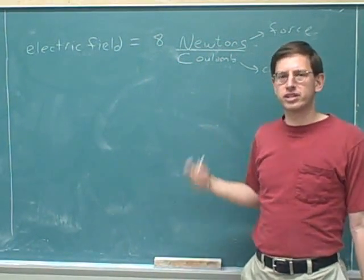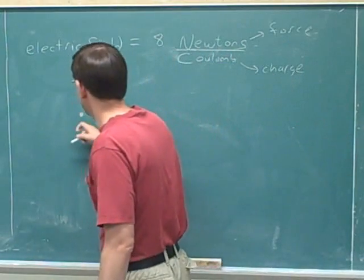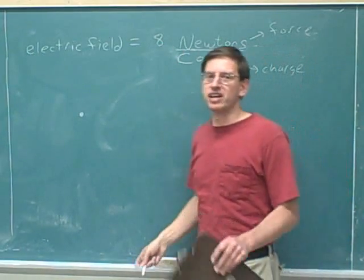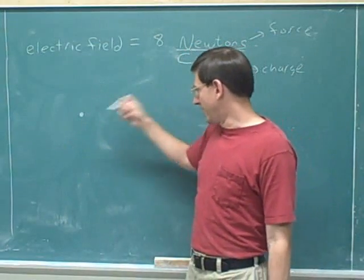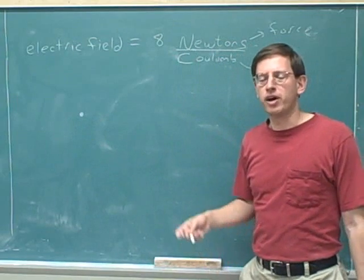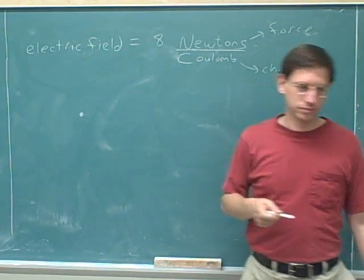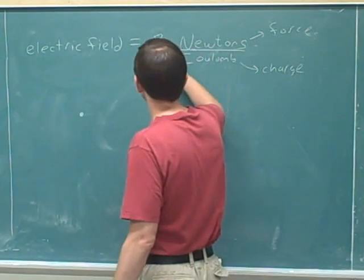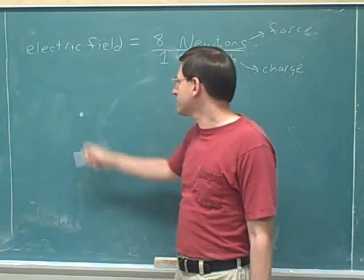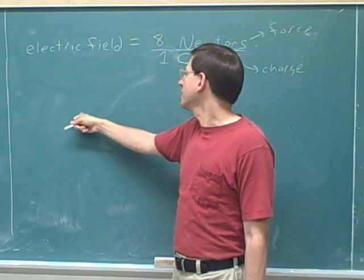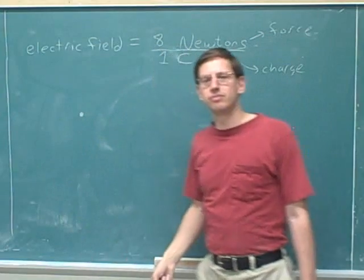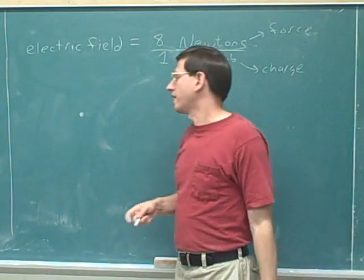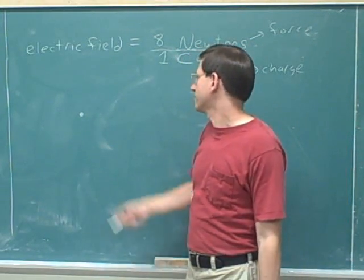This is a concept that gives people a lot of trouble, so let's do one more example. Let's say this point on the blackboard has an electric field of eight newtons per coulomb. Try to pause the video and articulate what that means. Well, combining the number with the units, we can see it means that if we placed a one coulomb charge at this point, it would feel an electric force of eight newtons. Now it should be easy to figure out what the force would be if we placed a three coulomb charge here.